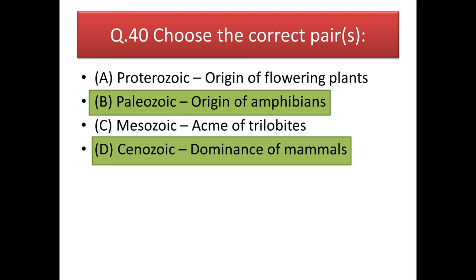Next question: choose the correct pairs. Proterozoic — origin of flowering plants: wrong, as flowering plants originated in the Cretaceous age (late Mesozoic). Paleozoic — origin of amphibians: correct. Mesozoic — acme of trilobites: wrong, as trilobites were highly developed in the Paleozoic era (acme means the point of highest development). Cenozoic — dominance of mammals: correct, as in the current Cenozoic era mammals dominate the world. So the correct answers are option B and option D.